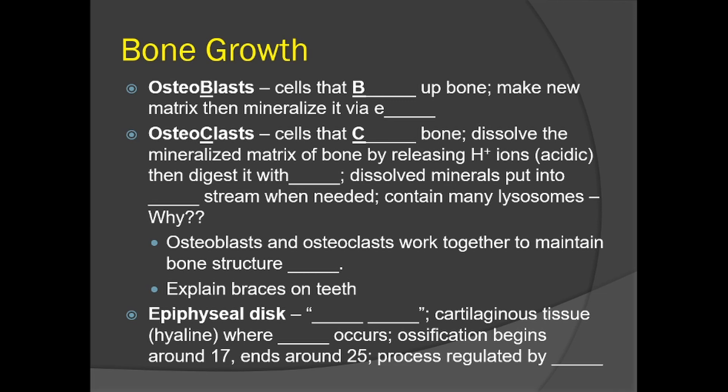The epiphyseal disc, commonly called the growth plate, is cartilaginous hyaline tissue where growth or mitosis occurs. Ossification begins around age 17 and ends around 25 years old — that's generalized but holds for most humans. The process is regulated by hormones, which determine when ossification should begin and when it is completed.